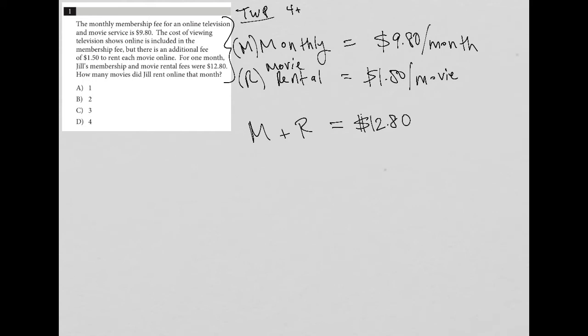And the truth is M, we know, is $9.80. So I can just replace that M with that. Her rental, we don't know how many movies she rented, so I'm going to say that is $1.50 times R, right? Because if she rented one movie, then it's just $1.50 times one. If she rented 10 movies, it'd be $1.50 times 10. So all that together is equal to this $12.80. So I'm translating the question as I go. So all of this entire equation just came out of what I just read.